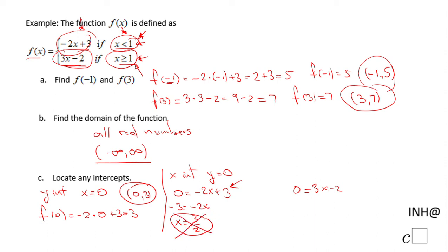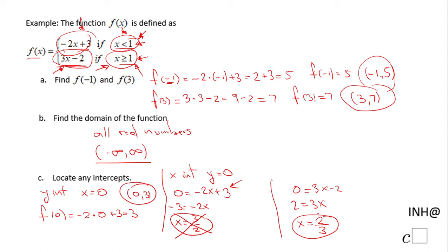For the second piece we solve 0 = 3x - 2, which gives 2 = 3x, so x = 2/3. But 2/3 is not greater than or equal to 1, so it does not belong to the second piece either. Therefore this function has no x-intercept.